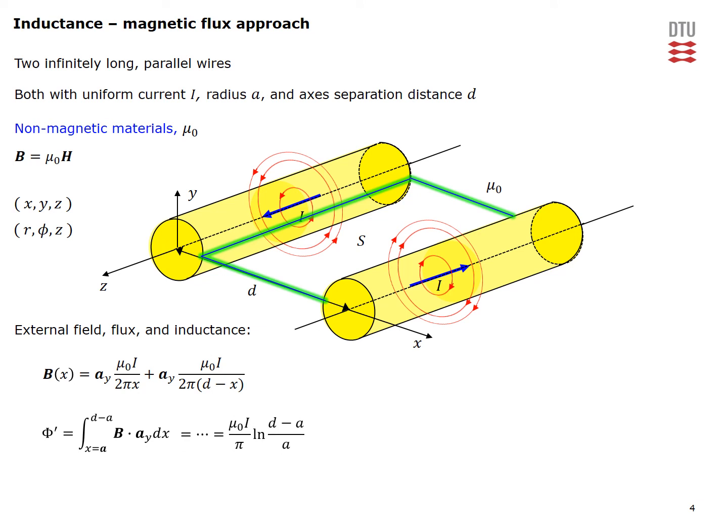If you do this you will be able to convince yourself that this magnetic flux which is linked by the current in these two wires externally is given by the expression shown here.